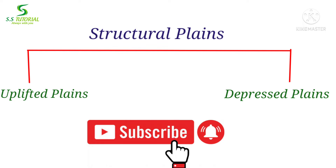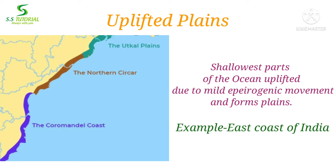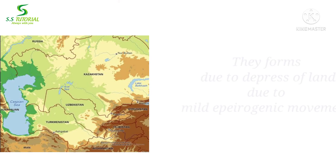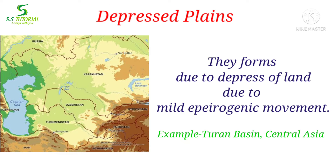Structural plains are further divided into two types: uplifted plains and depressed plains. When the shallowest part of the ocean or continental shelves are uplifted due to mild epeirogenic movement and form a plain, they are called uplifted plains. The plain on the east coast of India is one of the most notable examples. When an area of land is depressed due to mild epeirogenic movement and forms a plain land, it is called a depressed plain. The Turan Basin of Central Asia is a notable example.